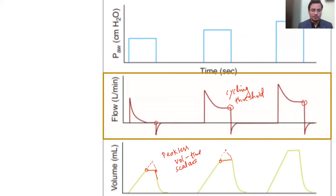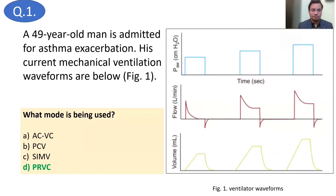The peaks are cut off because a certain pressure is reached. Why is the pressure changing and increasing? Because the ventilator is testing the breath. This kind of variability is a feature of pressure regulated volume control mode. In pressure control ventilation, the breath would be of constant shape — but here the shape is changing, so it is pressure regulated volume control.